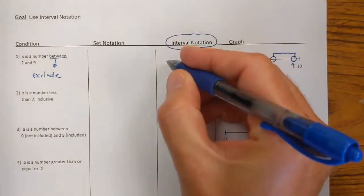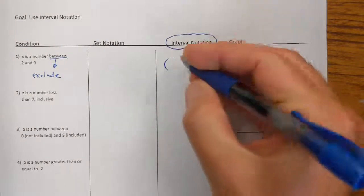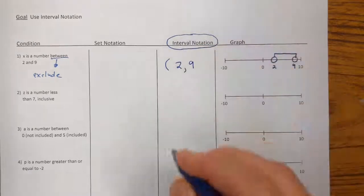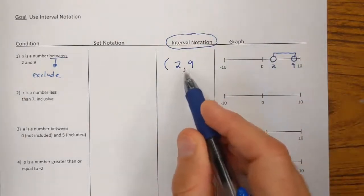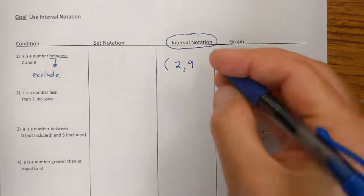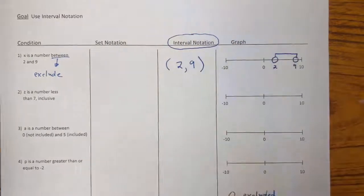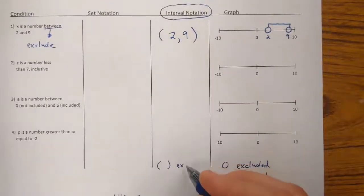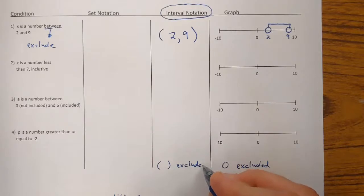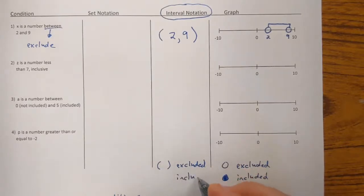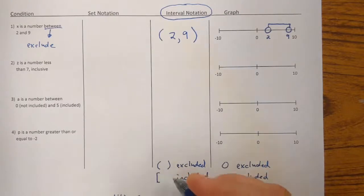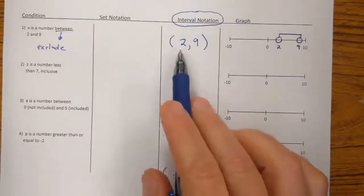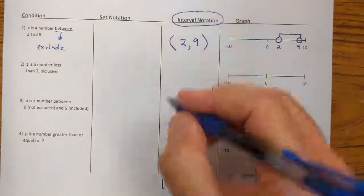Now, how can we show this as an interval? Interval notation for 'x is a number between 2 and 9' looks like this: we write our two endpoints, the 2 and the 9, and surround them with parentheses. With interval notation, parentheses means the endpoints are excluded. Whereas to show that endpoints are included, we would use square brackets. In this case, since 2 and 9 are not included, I use parentheses: (2, 9).